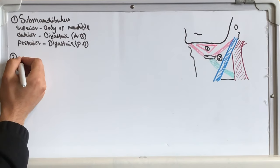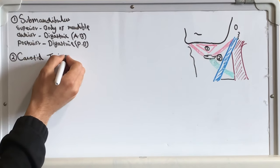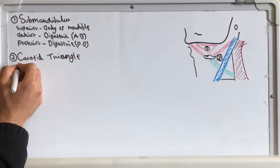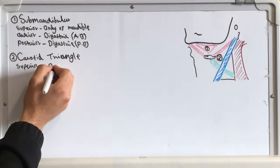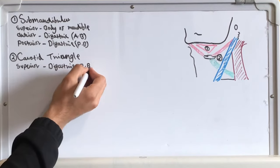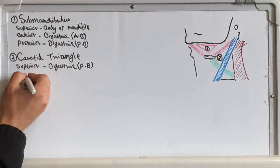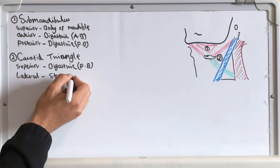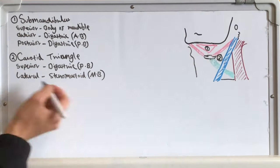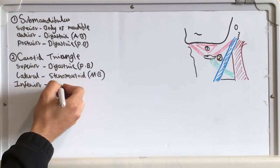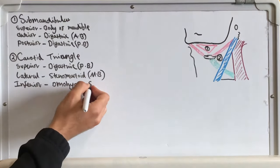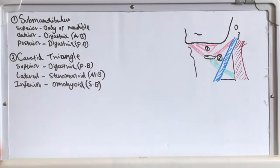The second triangle is the carotid triangle which consists of the superior border being the digastric muscle posterior belly, the lateral border being the sternomastoid muscle, its medial border and the inferior border being the omohyoid muscle, its superior belly.